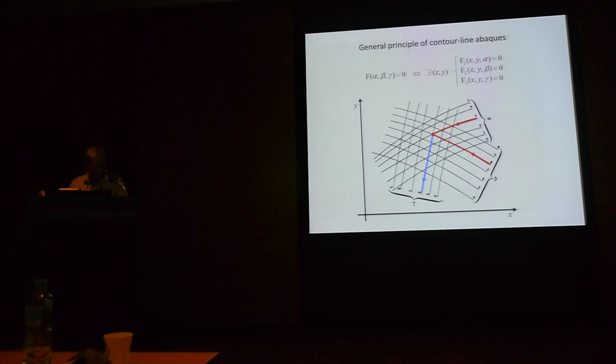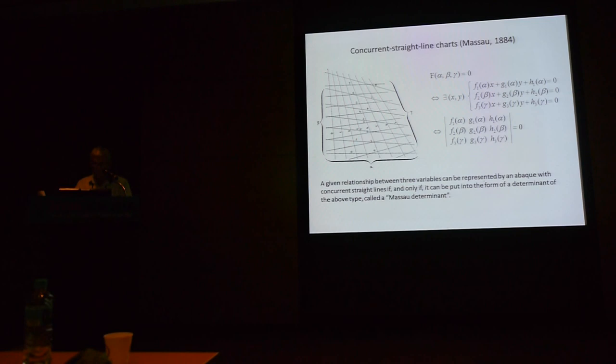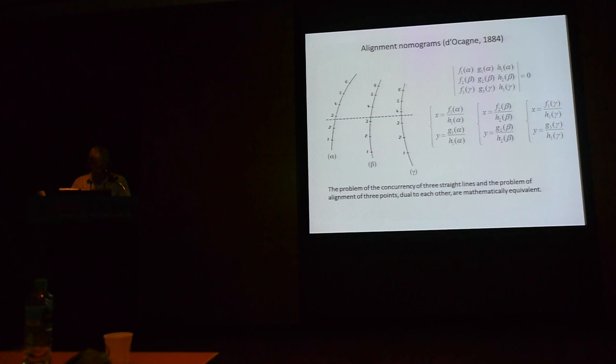It was especially Lalanne in 1843 who gave a decisive impetus to the theory of these graphical tables, which he called abaques. After Lalanne, the concurrent line abaques spread rapidly until becoming in the third quarter of the 19th century very common calculation tools in the world of French engineers. Massau succeeded Lalanne in enriching the method and its scope of application. For that, he introduced a notion of generalized anamorphosis, seeking what are the functions that can be represented using three pencils of straight lines. Massau put in evidence that the given relationship between three variables can be represented by a concurrent straight line abaque if and only if it can be put into the form of a determinant in the type that you can see on the slide. These determinants, called Massau's determinants, played an important role in the subsequent history of nomography; they are encountered in research until today.